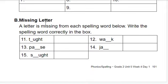And then next, missing letter. A letter is missing from each spelling word below. Write the spelling word correctly in the box. So this would be taught: T-A-U-G-H-T. Pause: P-A-U-S-E.